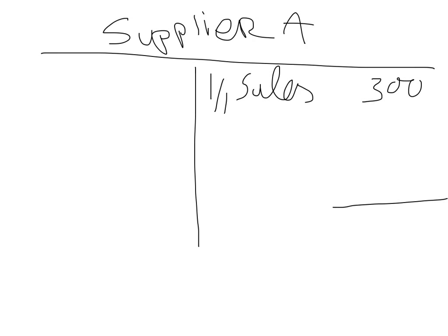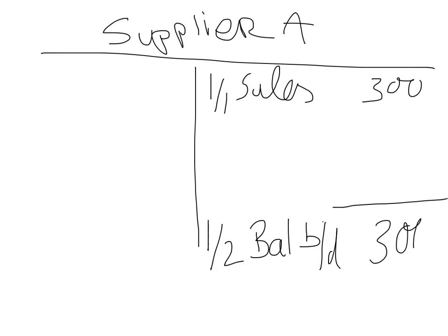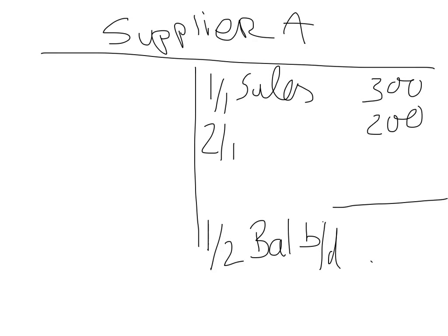So what you say is on the next month the balance we carry down — so the first of the next month, first of the second — BAL BD 300 pounds. Simple as that. Had there been any more transactions in here, for example 200 pounds on the second of the first, your total value would have been 500 pounds, and that's transferred into next month.